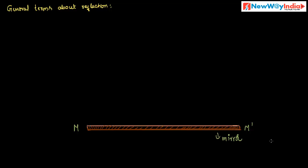Next, what is incident ray? A ray of light which travels towards the surface of the mirror is called incident ray. It strikes the surface at a particular point. Here the incident ray is AO, and this is the point where the incident ray strikes, that is O.